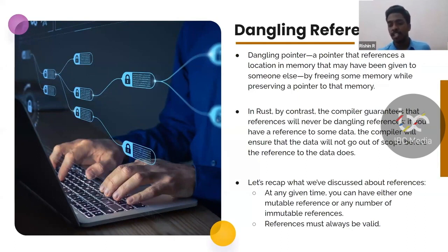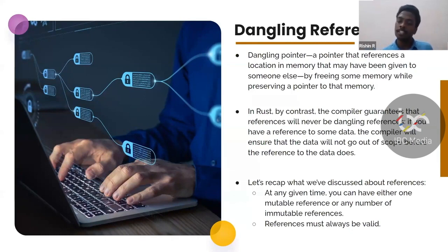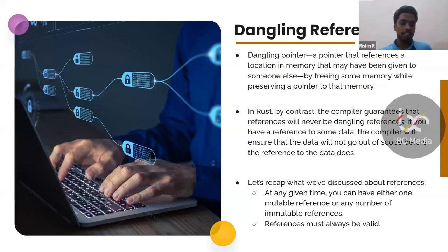In Rust, this would raise a compile-time error. But this is possible in C, where you will be prompted by an error called a segmentation fault or core dump. This happens when you have dangling pointers, or you are pointing to memory that has not been allocated, or you are trying to access variables without allocating memory. There are different kinds of memory errors that usually happen when playing with pointers.